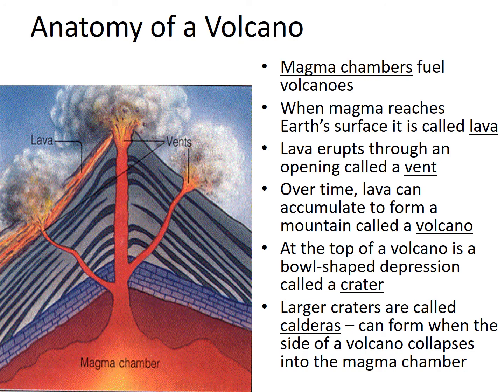Let's look at the anatomy of a volcano. First we need to talk about the magma chambers. Magma chambers provide the fuel for the volcanoes. Magma, once it reaches the Earth's surface, is called lava.